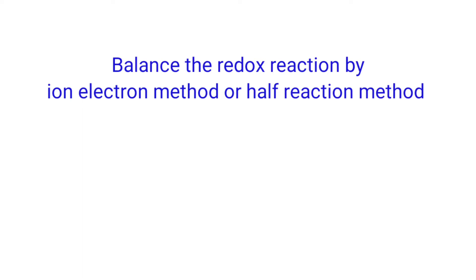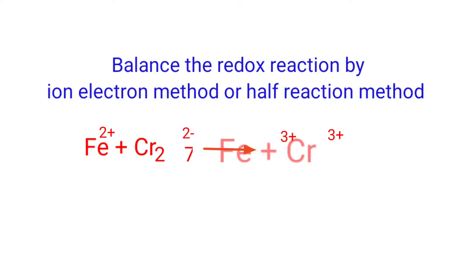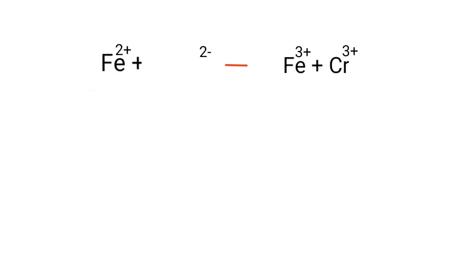Balance the Redox Reaction by the Ion Electron Method, also known as the Half Reaction Method. The reaction is: Ferrous Ion plus Dichromate gives Ferric Ion plus Chromium 3 Ion. We first figure out the reducing and oxidizing agents by the rules of assigning oxidation numbers.